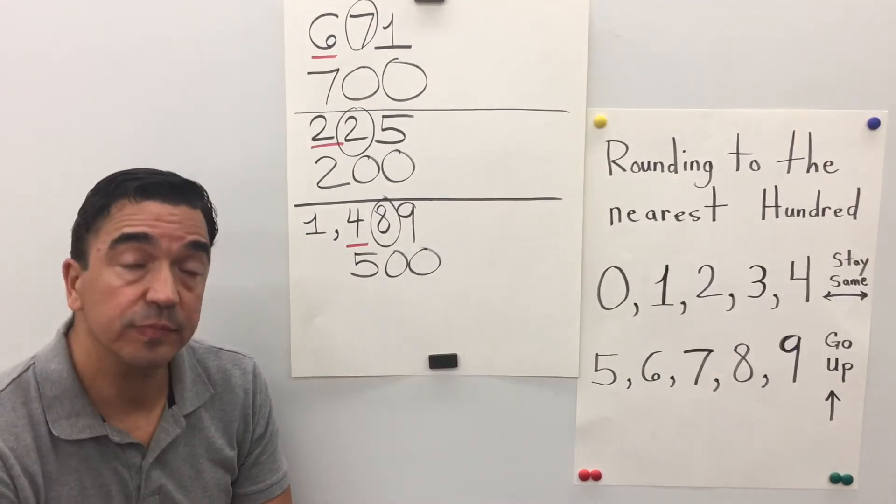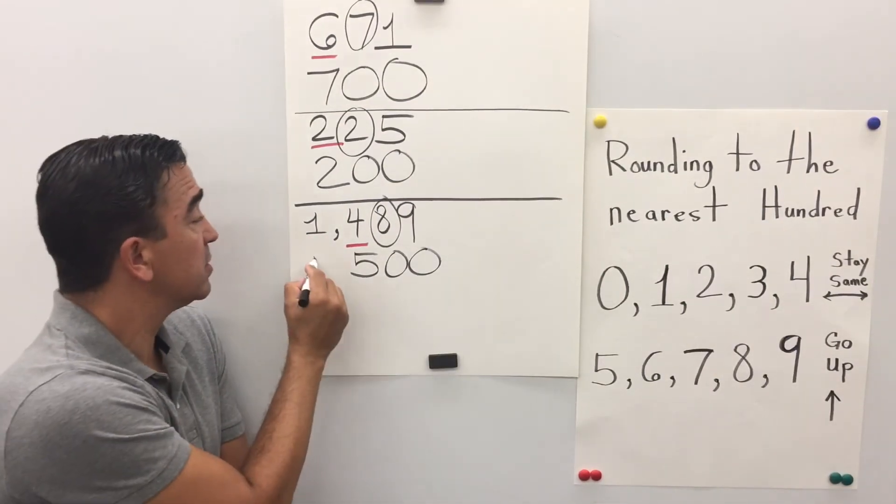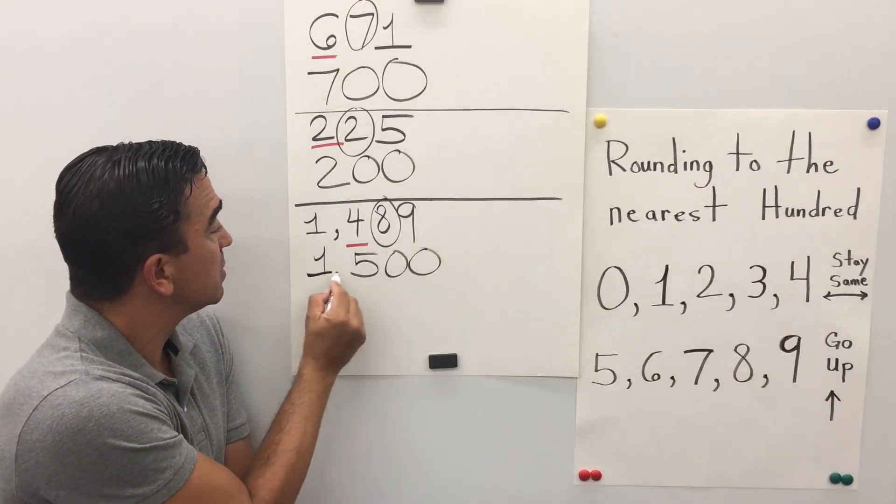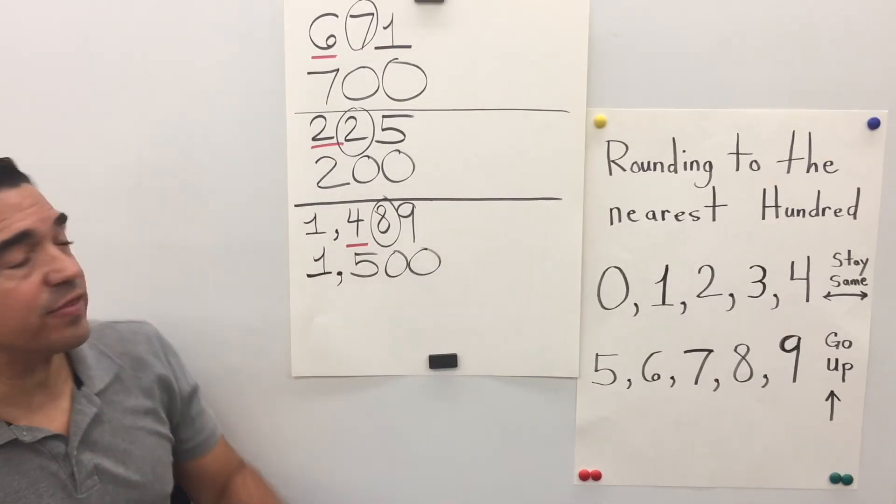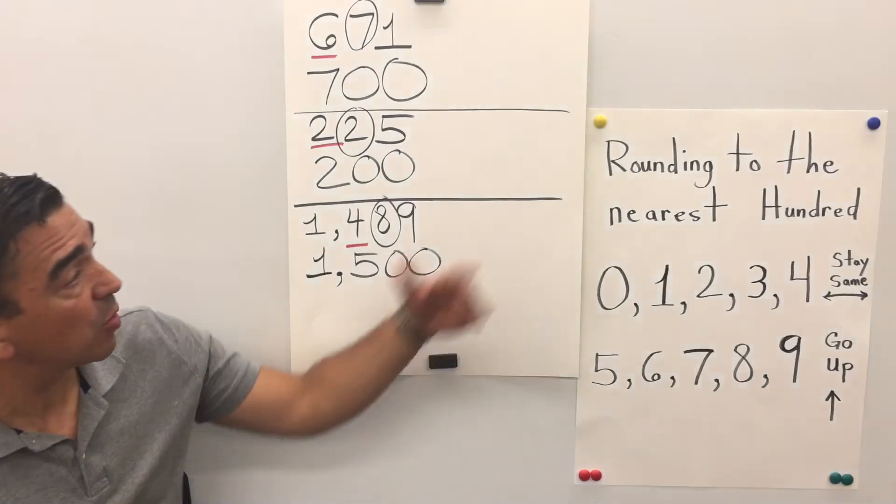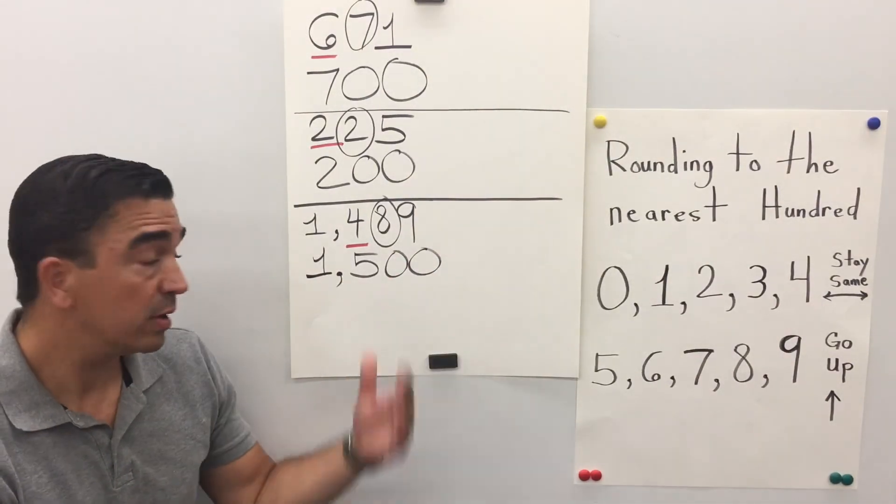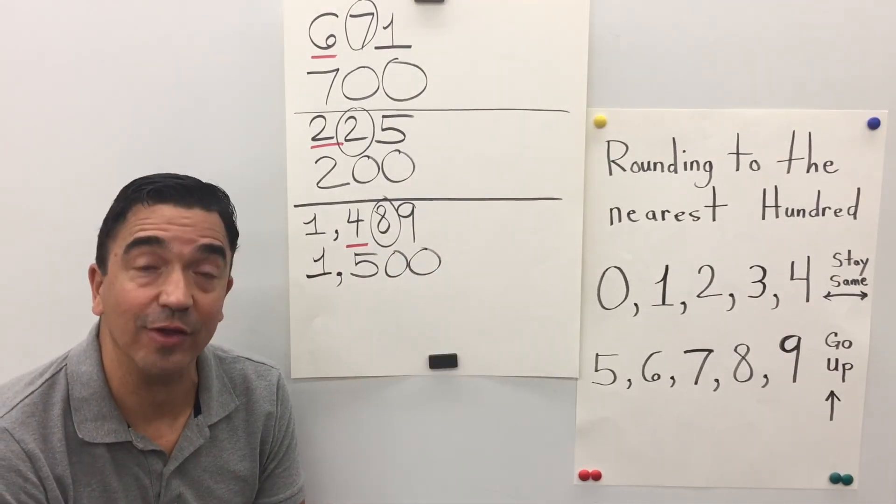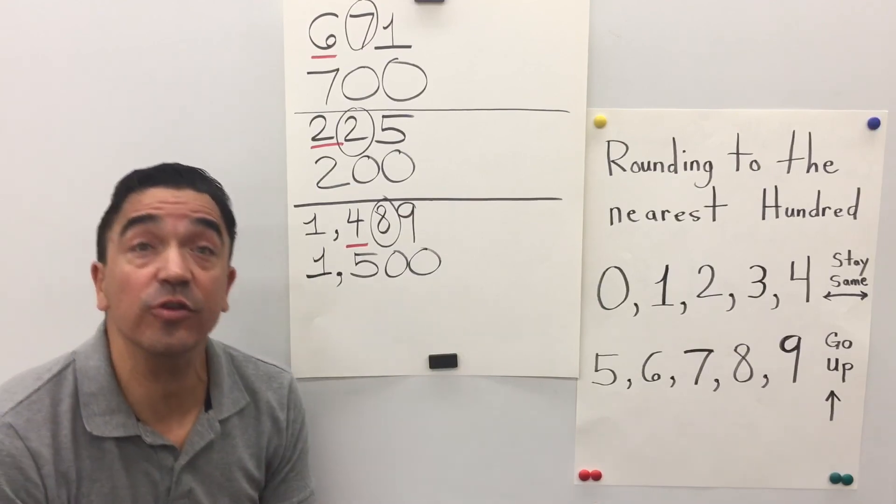The 1 stays. 1,489 rounded to the nearest hundred is 1,500. And that concludes our lesson. Thank you.